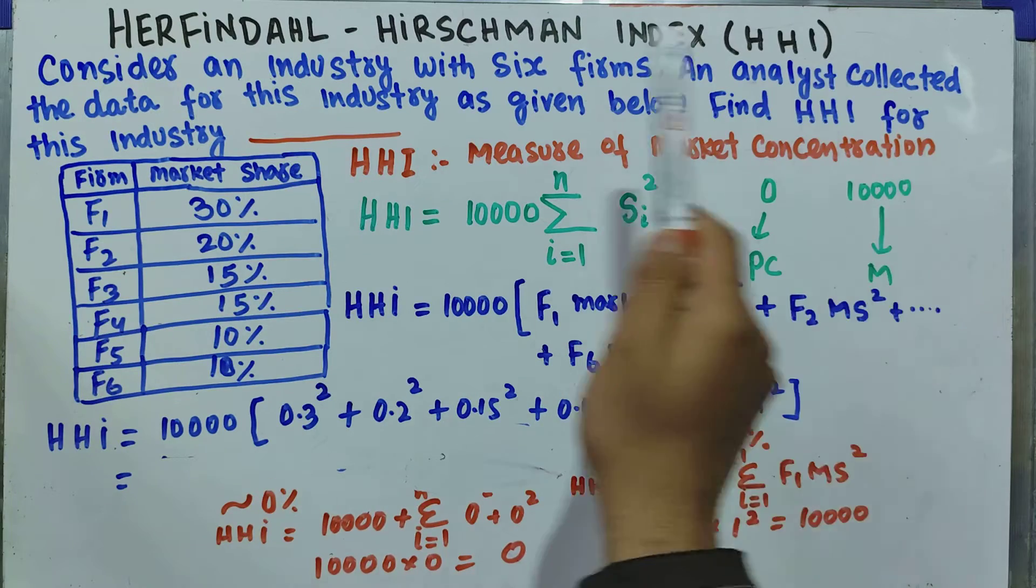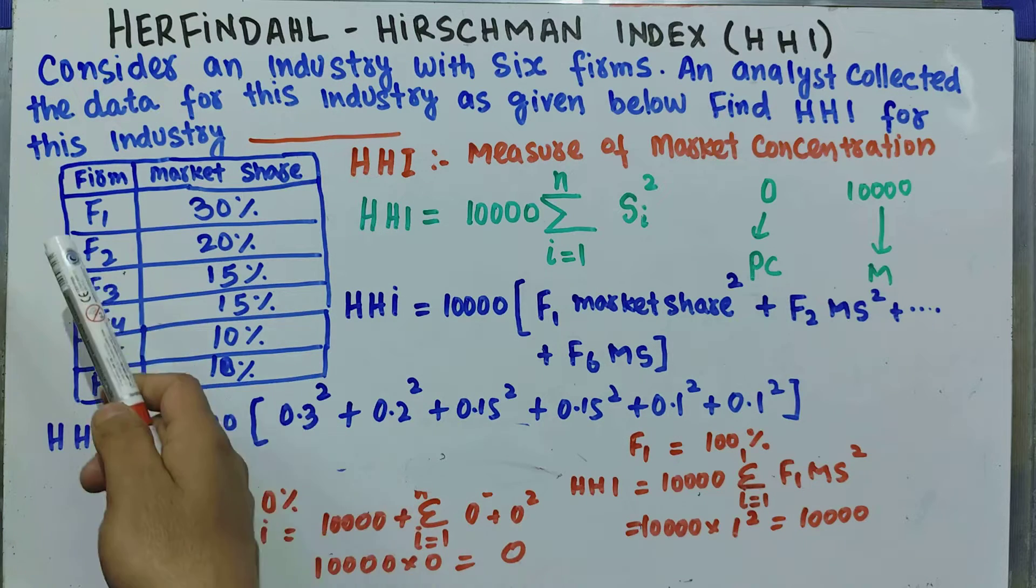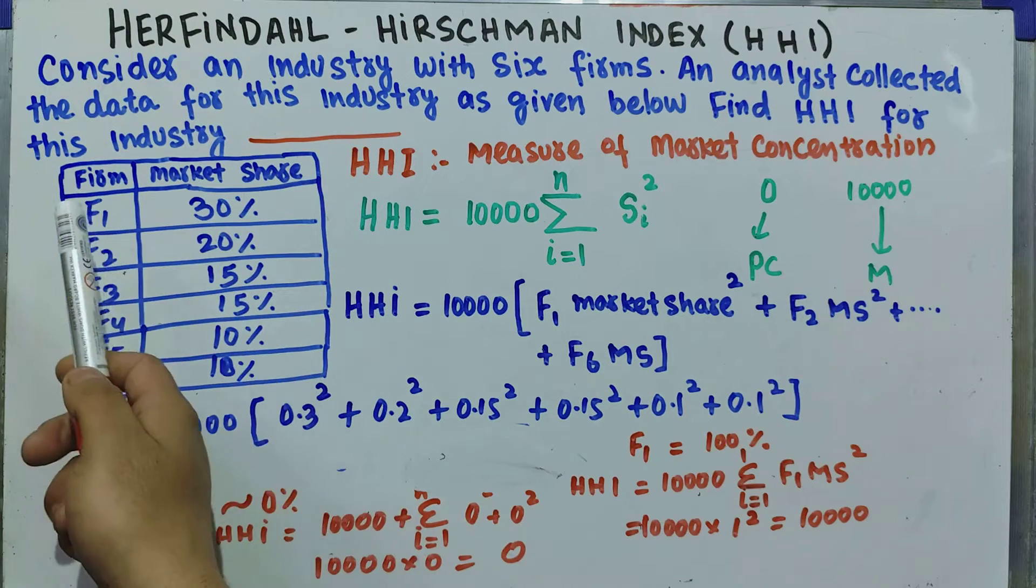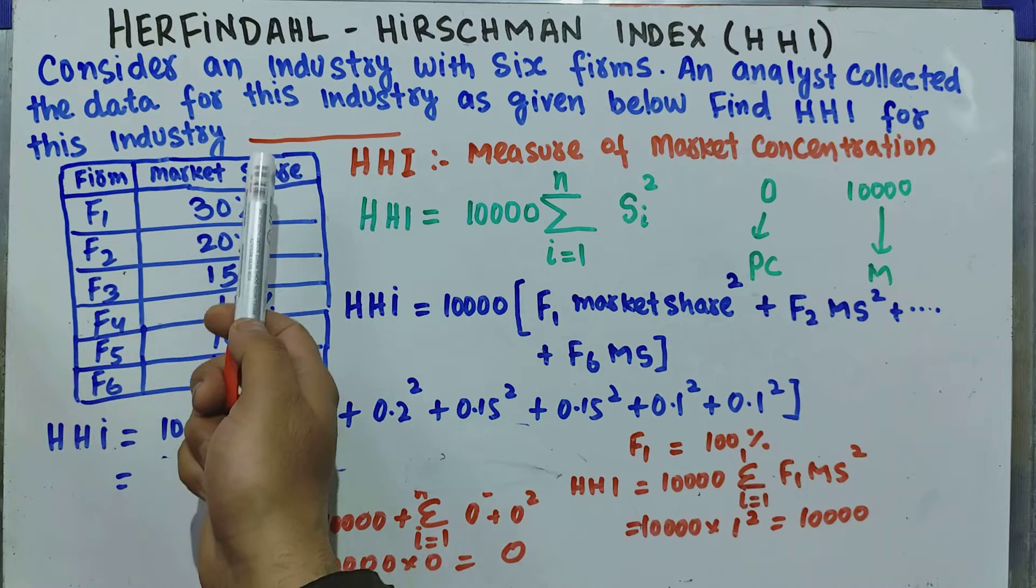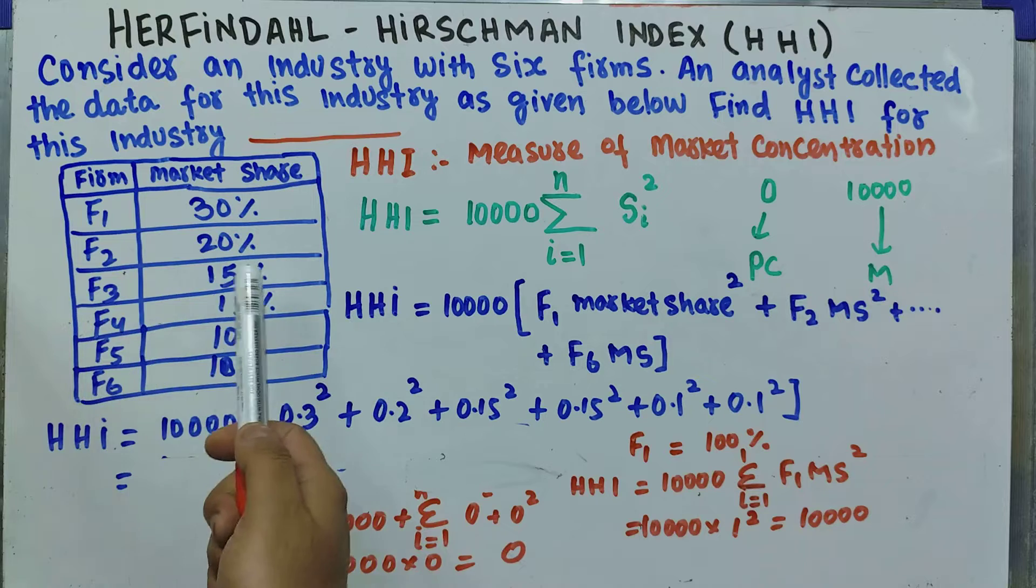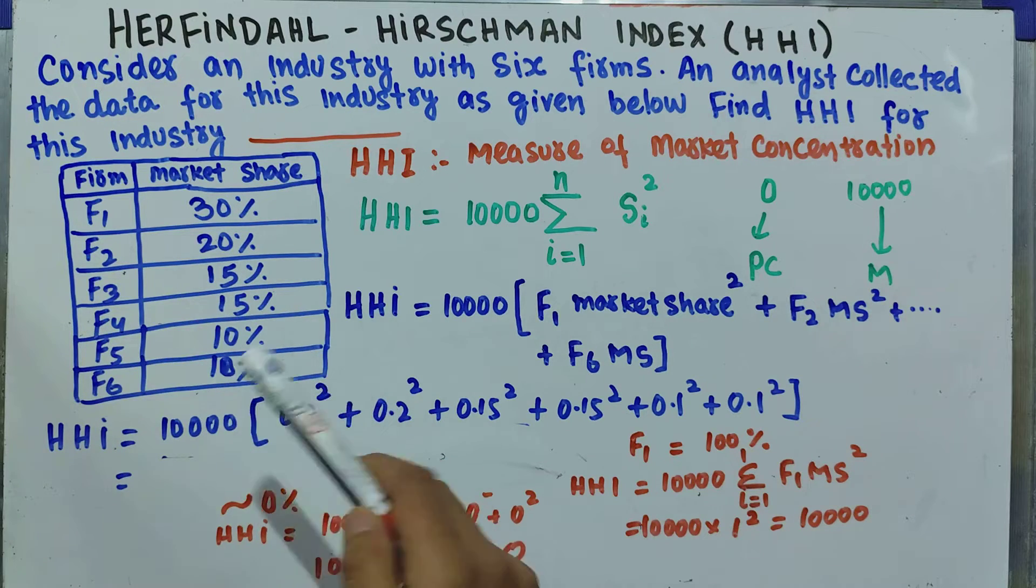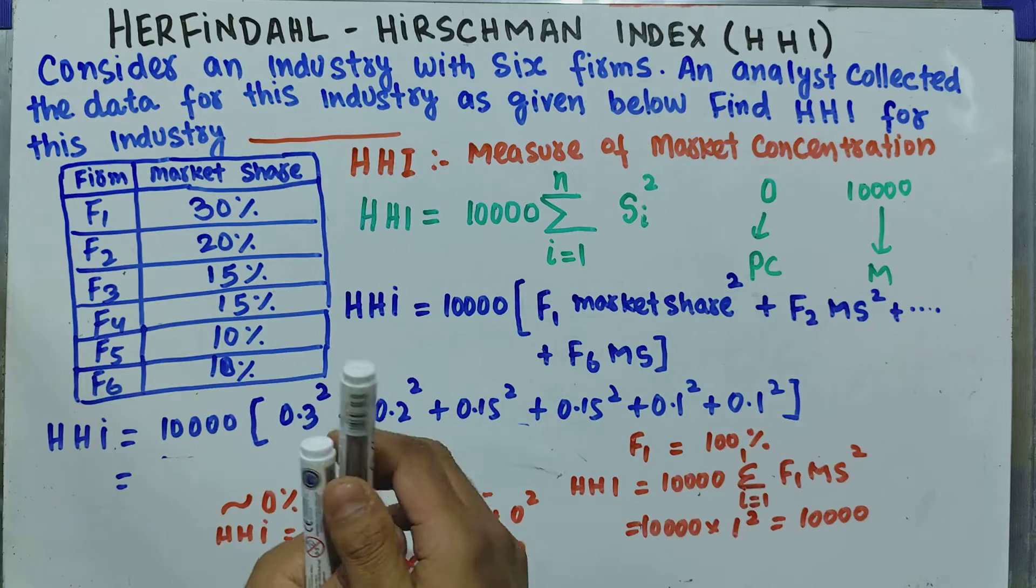We are being given six firms and their corresponding market share. Firm one's market share is 30% of the total market. Similarly, for firm two it is 20%, for firm three it is 15%, for firms four, five, and six it is 15%, 10%, and 10% respectively.